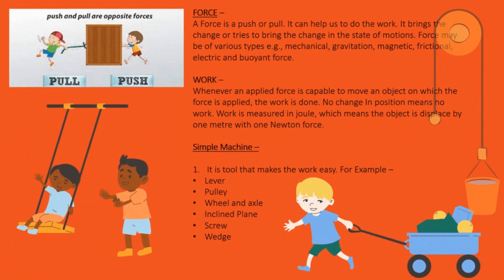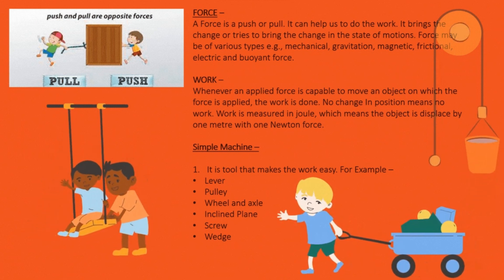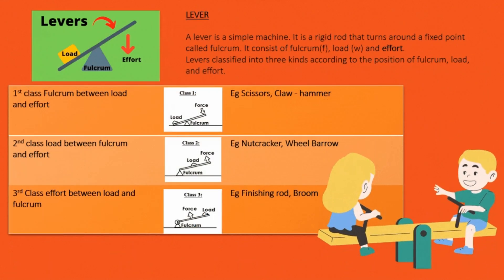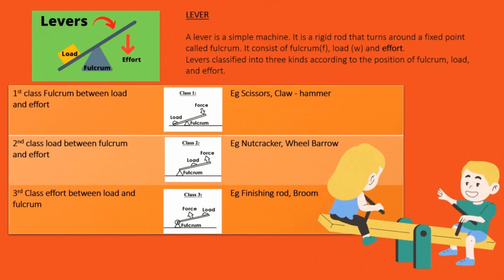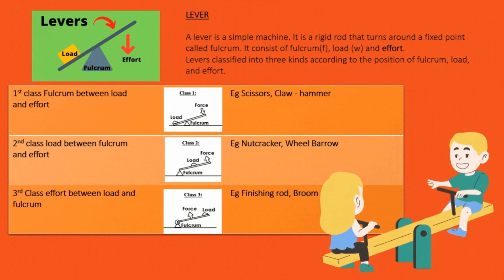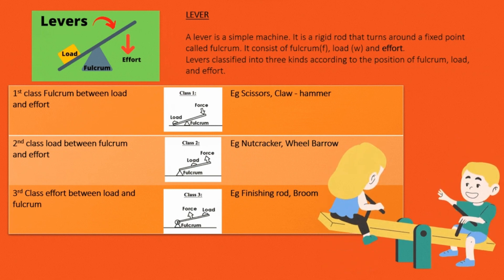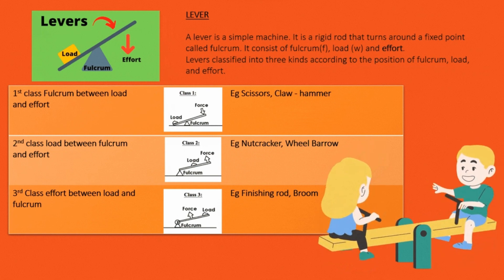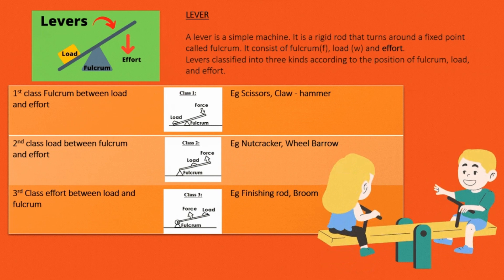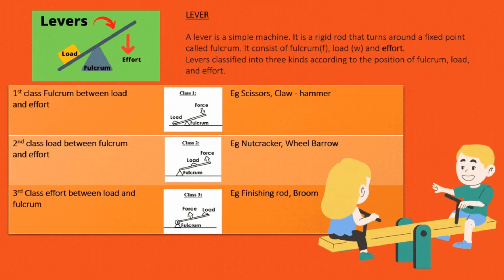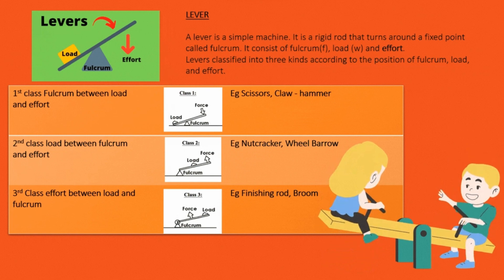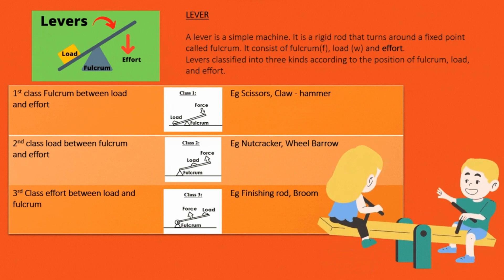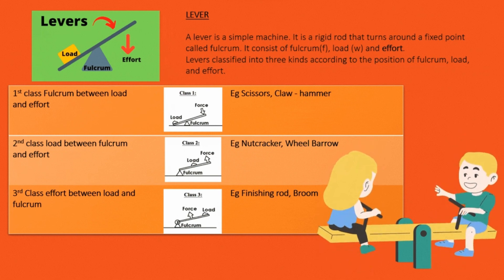Lever: A lever is a simple machine. It is a rigid rod that turns around a fixed point called fulcrum. It consists of fulcrum, load and effort. Levers are classified into three kinds according to the position of fulcrum, load and effort. First class: fulcrum between load and effort, for example, scissors, claw hammer. Second class: load between fulcrum and effort, for example, nutcracker, wheelbarrow. Third class: effort between load and fulcrum, for example, fishing rod, broom.